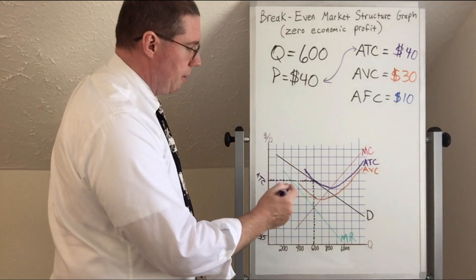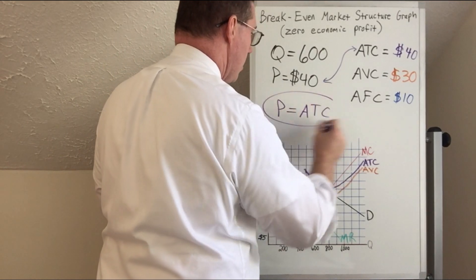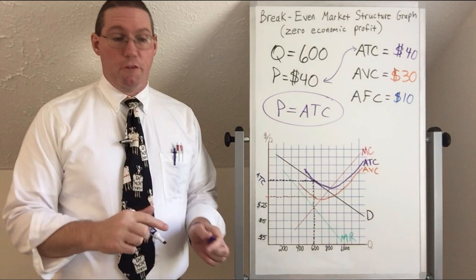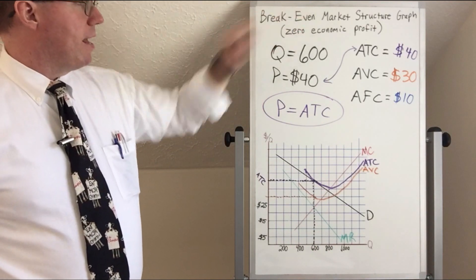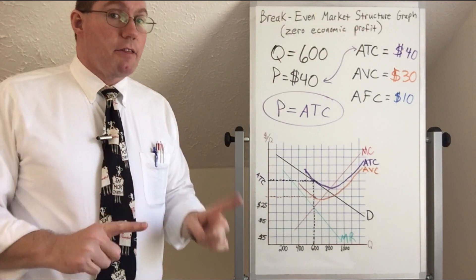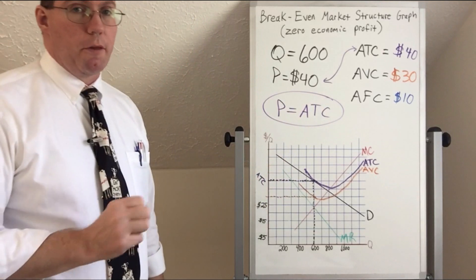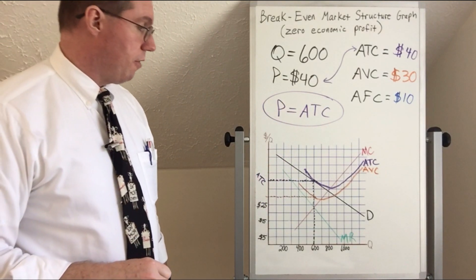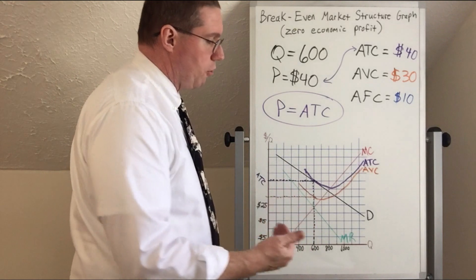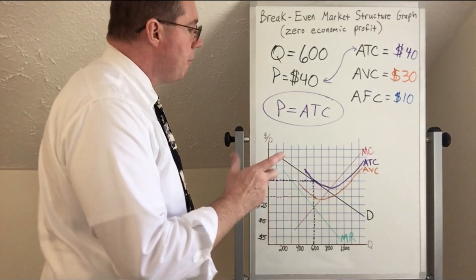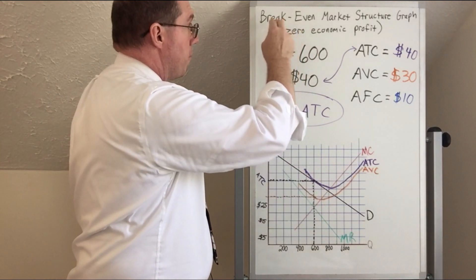Here's what's interesting: the price is equal to the average total cost. Remember what we said just a few minutes ago — in order for a firm to break even or earn zero economic profit, the price of the product they sell must equal the average total cost of producing it. So this is a situation of a firm breaking even, and this is what you'll be looking for on a market structure graph.